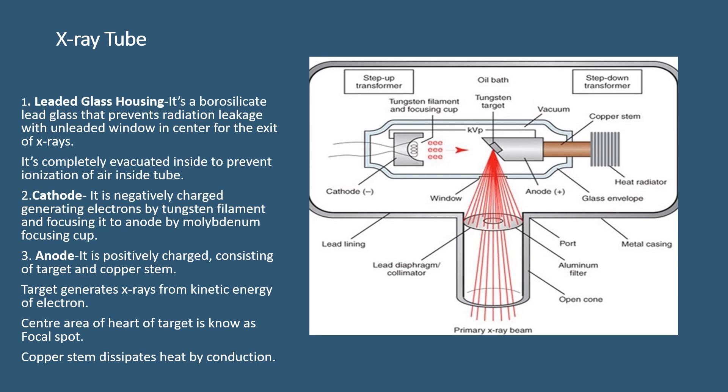The anode is positively charged and consists of a tungsten target and a copper stem. The tungsten target generates x-rays from the kinetic energy of electrons. The center area of the target is known as the focal spot. The function of the copper stem is to dissipate heat by conduction.